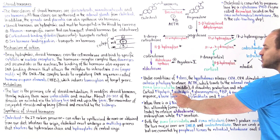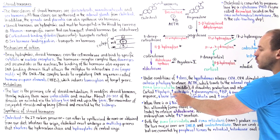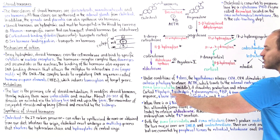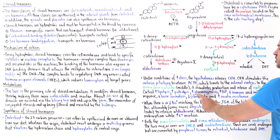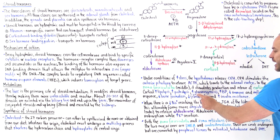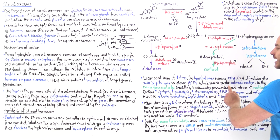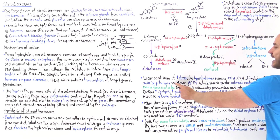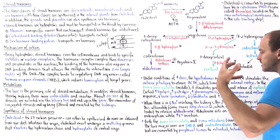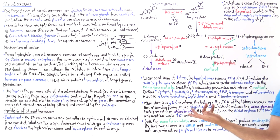Cortisol also increases proteolysis in skeletal muscle tissue, and it goes to the liver to increase gluconeogenesis, producing more glucose. This makes sense because under high levels of stress — such as an infection — we want more glucose available to deal with that stress.